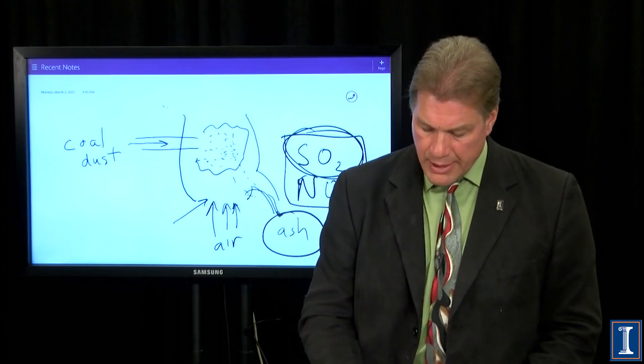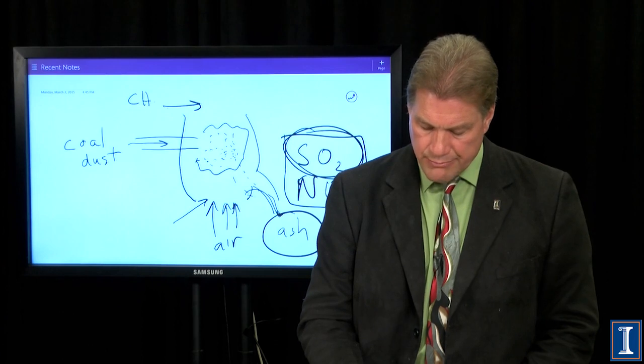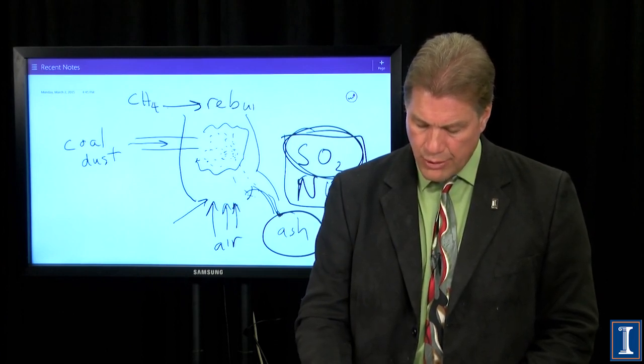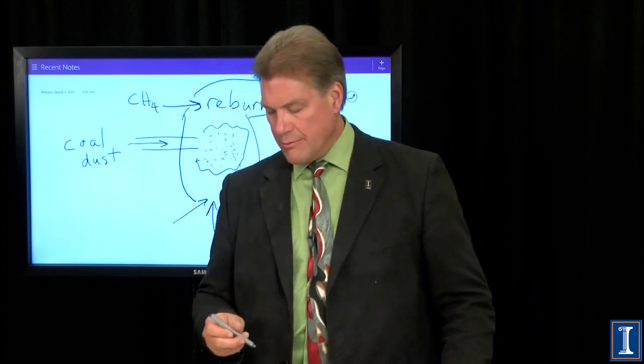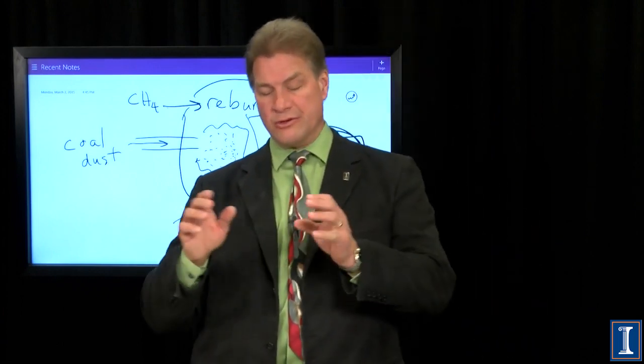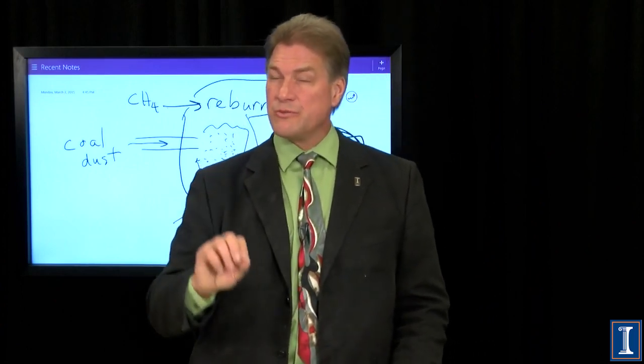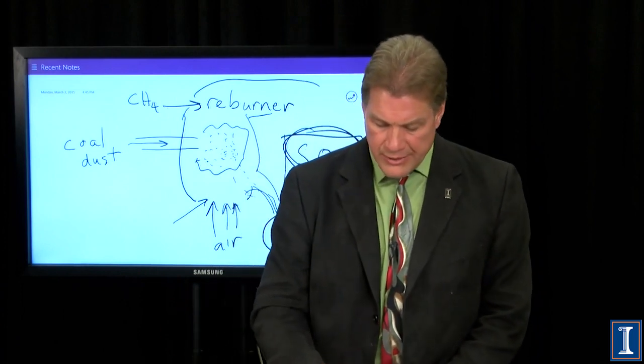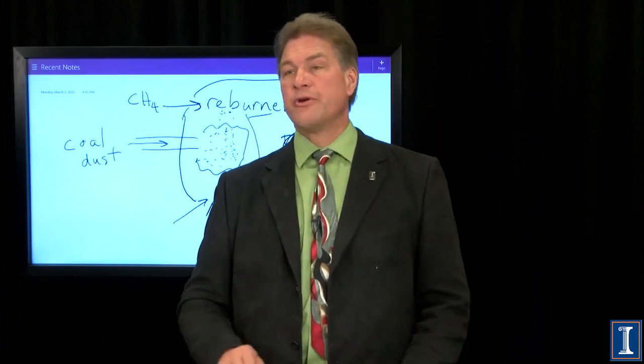The next step in a power plant is to burn some natural gas. Actually throw some methane in here for a reburner. What does that do for you? Well, it means that every coal power plant is really a coal combined natural gas power plant, but the energy content you get from this is small. You're not burning that much natural gas. What you're doing is making sure any of these fine dust particles that still have carbon in them get burned up.